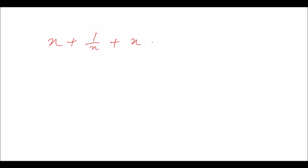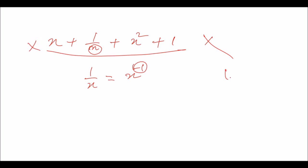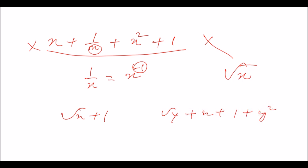Final example: x plus 1/x plus x squared plus 1 — since 1/x equals x to the power minus 1, and minus 1 is a negative power, this expression is NOT a polynomial. Similarly, root over x plus 1 is not a polynomial because root over a variable gives a fractional power. Root over y plus x plus 1 plus y squared — since root over y gives a fractional power, this expression is also NOT a polynomial.